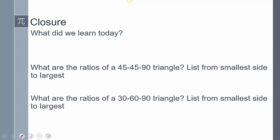So to close today's lesson, what did we learn today? Well, we briefly talked about the Pythagorean theorem, and then we talked about the special triangles, the 45, 45, 90, and the 30, 60, 90 triangle, and be able to find the missing pieces of it.